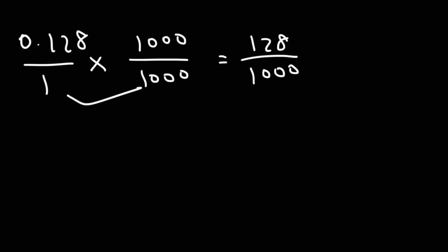So, now we've got to simplify. If you don't know the factors of 128 and 1,000, you could just divide by 2. Half of 128. Half of 12 is 6. Half of 8 is 4. So, we get 64. Half of 1,000. Half of 10 is 5. And then, if you bring over the two zeros, you get 500.